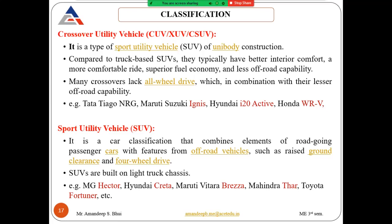A sports utility vehicle (SUV) combines elements of on-road and off-road vehicles. SUVs have raised ground clearance and four-wheel drive, making them suitable for off-road conditions. They are built on a light truck chassis — not unibody construction — with a separate frame and chassis. Examples include MG Hector, Hyundai Creta, Maruti Suzuki Vitara Brezza, Mahindra Thar, and Toyota Fortuner.